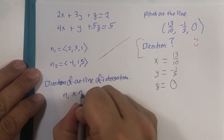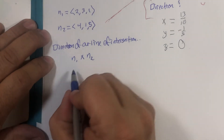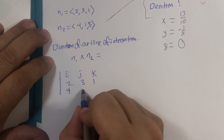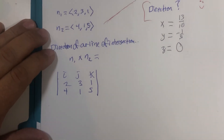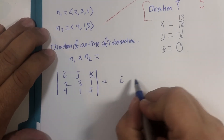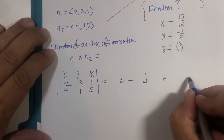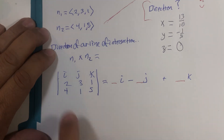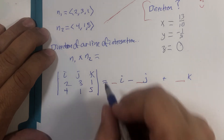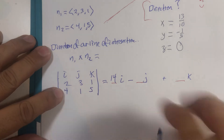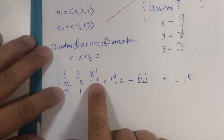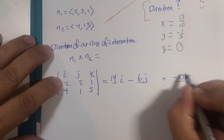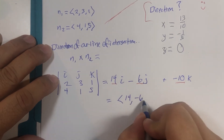The direction of our line of intersection is the cross product of the two normal vectors. Setting up the determinant with i, j, k / 2, 3, 1 / 4, 1, 5: the i component is 15 − 1 = 14; the j component is −(10 − 4) = −6; and the k component is 2 − 12 = −10. So the direction vector is (14, −6, −10).